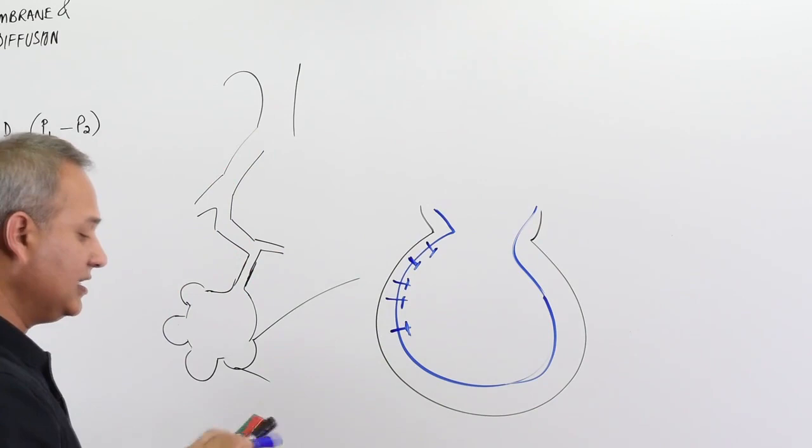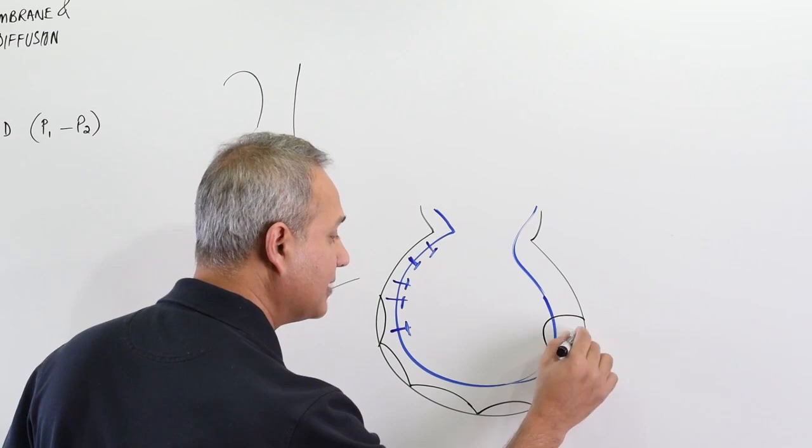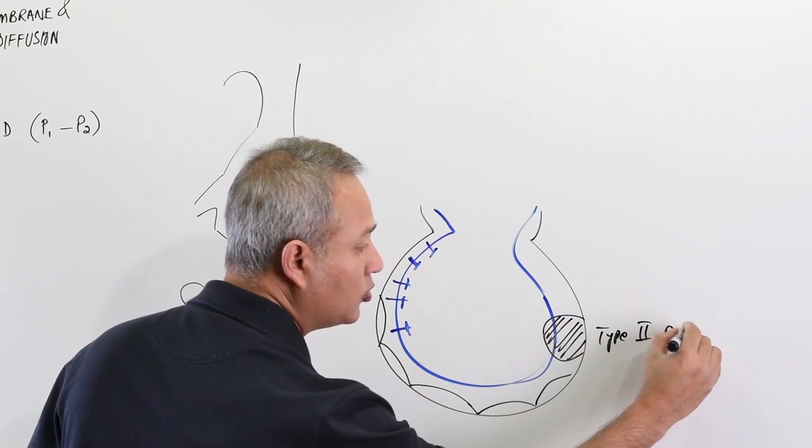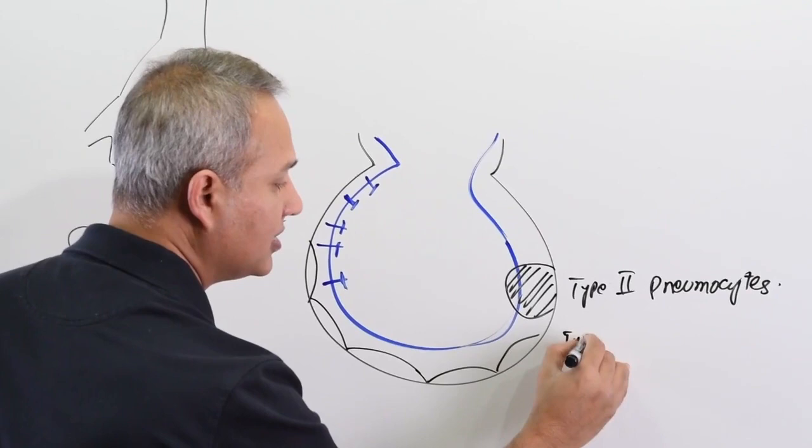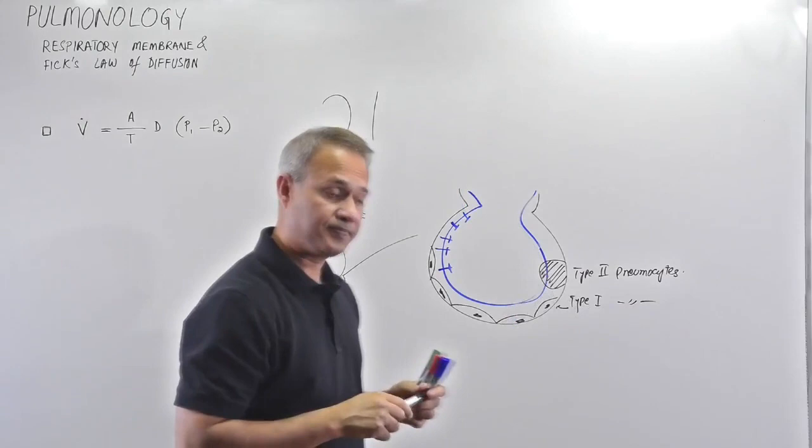Then this is the epithelial layer. So these are epithelial cells of alveoli, pneumocytes type 1, and then 10 percent of the cells are type 2 pneumocytes. And then there are type 1 pneumocytes, really thin system. How thin? I'll explain that in a second. Let me do that right now.